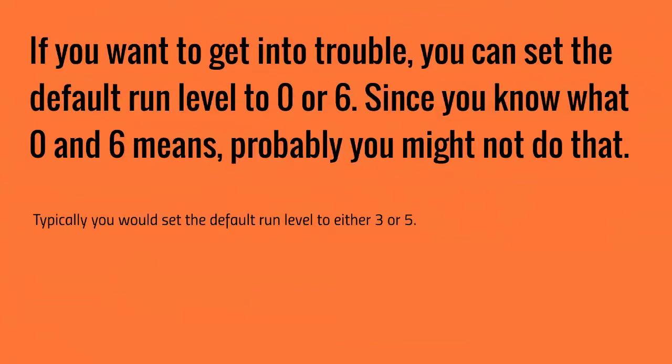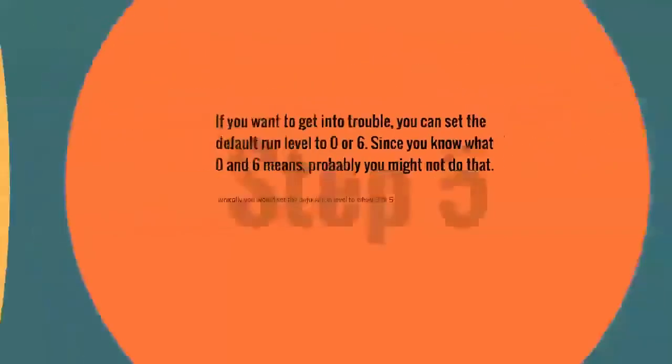If you want to get into trouble, you can set the default run level to 0 or 6 — since you know what 0 and 6 mean, you probably won't do that. Typically, you would set the default run level to either 3 or 5.